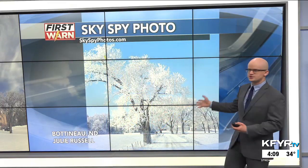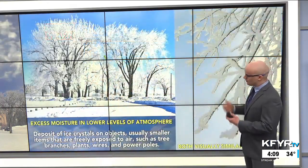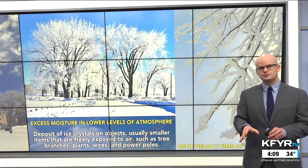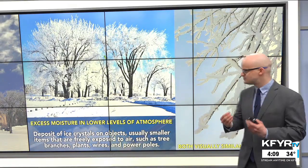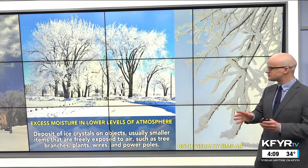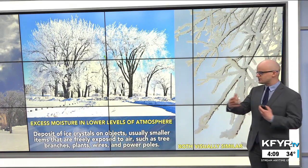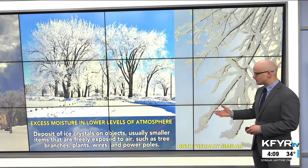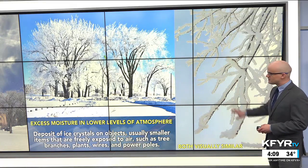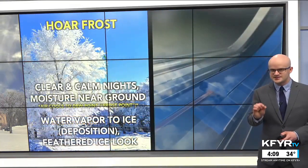Whereas hoarfrost occurs on clearer and calmer nights. They're both caused when you have excess moisture in the lower levels of the atmosphere — it happens when you deposit ice crystals on objects, usually smaller items freely exposed to the air like a tree branch, plants, wires, or power poles. They're both very visually similar, so there are some very subtle differences.